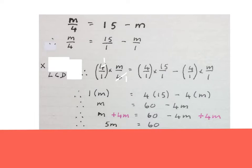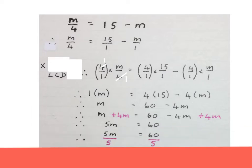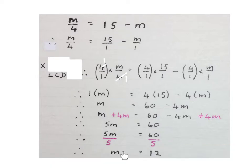Now to get rid of the 5 next to the m. There's a multiply between the 5 and the m. We divide by 5 on both sides. The final answer m equals to 12. 5 goes into 60 12 times.